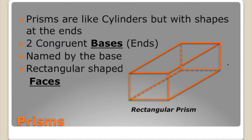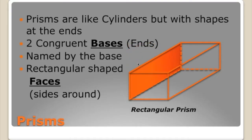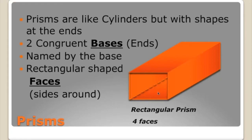You should also know that a rectangular prism has rectangular-shaped faces. The faces are the sides around the prism, while the bases are the ends. So the left side, the top, the right side, and the bottom are all faces — four faces total. It's easy to tell how many faces a prism will have by looking at the base. If the base is a four-sided shape like a rectangle, then it's going to have four faces around.